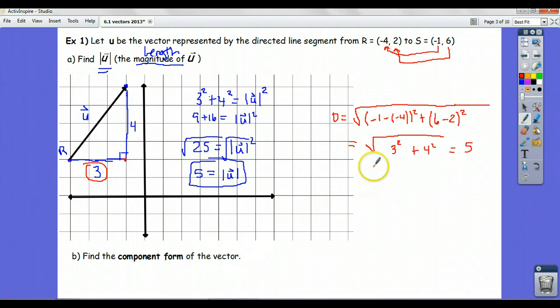So there's its magnitude, two ways of finding it. Part B says find the component form of the vector. Now this is generally really easy if you have a graph in front of you. Start at the tail. To get to the head, you move 3 right and up 4. So vector u in component form we can write as (3, 4).